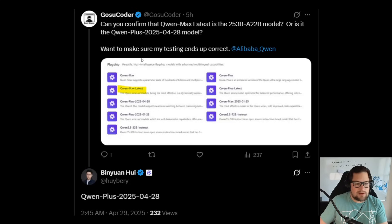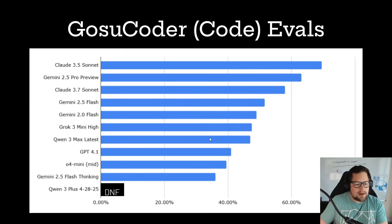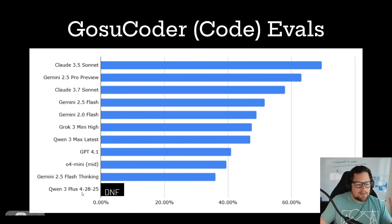I confirmed that QwenPlus 2025-4-28 is the latest because I was testing both the QwenMax and QwenPlus models, and messaging them confirmed it. Here's the overall list of models they support on Alibaba Cloud — the two I looked at were QwenMax latest and QwenPlus 2025-4-28. My evals used QwenPlus 3 to do minor things in my codebase. It just does not work with Roo Code. This is the 235B parameter model — they name it QwenPlus, so this is the open-source one.